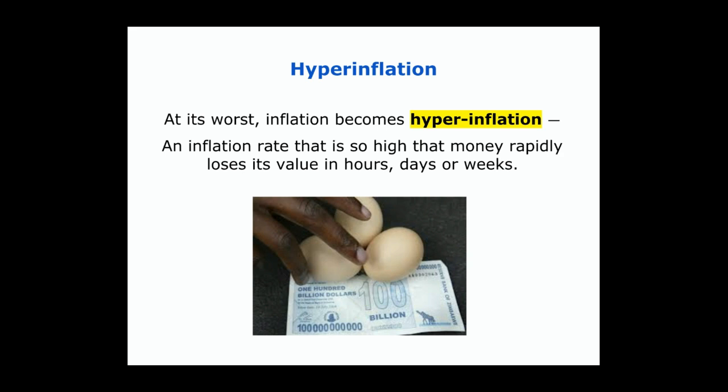If inflation becomes out of control, if it becomes so high, at its worst it's called a hyperinflation. This is when prices are rising so quickly — within minutes, hours, or days — that money completely loses its value. Here in the picture, this is from Zimbabwe in 1994, where somebody is buying three eggs with a $100 billion bill. In this case, the money becomes not useful as a store of value or as a medium of exchange.